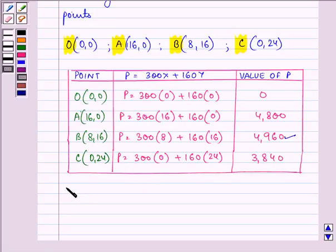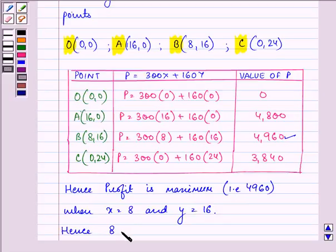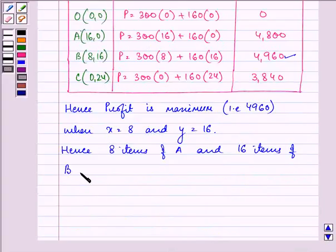So, we can clearly see that profit is maximum, that is 4,960 when x is equal to 8 and y is equal to 16. Hence, 8 items of A and 16 items of B per day should be manufactured.